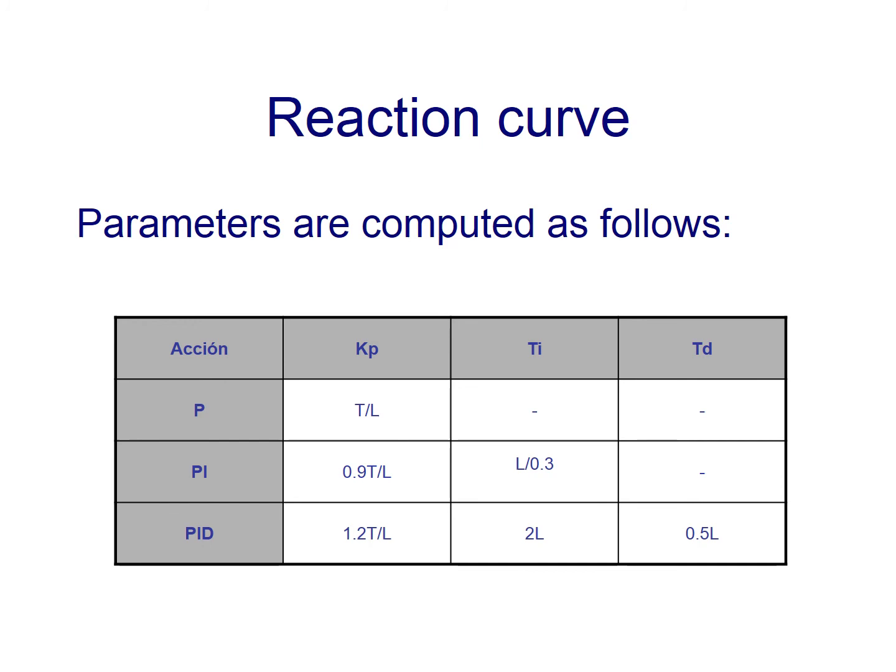Once we have values of T and L, which again, those are time values, then parameters for a PID are computed using the following table. So, for example, if we adjust parameters of a PID, then we know that Kp is going to be 1.2 times T over L, Ti is going to be 2 over L, and Td is going to be 0.5 over L.